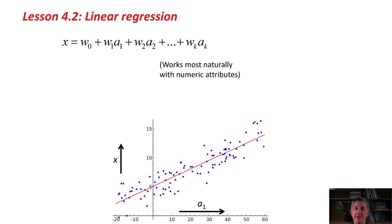That's the equation of this line, where w0 and w1 are two constants to be determined from the data. This is going to work most naturally with numeric attributes, because we're multiplying these attribute values by weights. We'll worry about nominal attributes in just a minute.